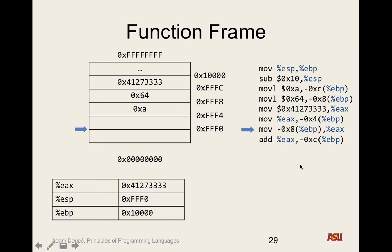Now we move EBP minus 8 — which has the value 64, or 100, which is essentially B — into EAX. I show A, B, and C here to relate it to the variables. Remember, this assembly code doesn't care at all about variable names or types — all it's doing is moving bits around using these assembly instructions.